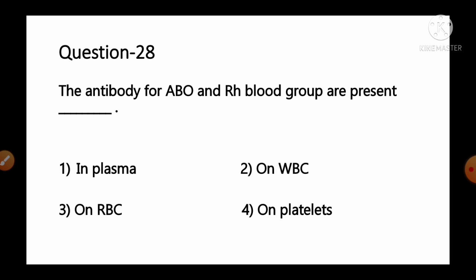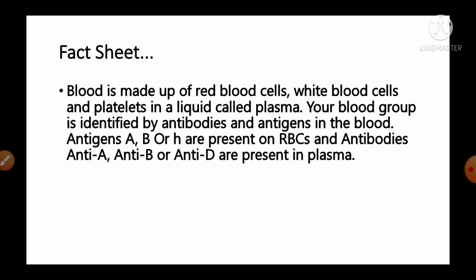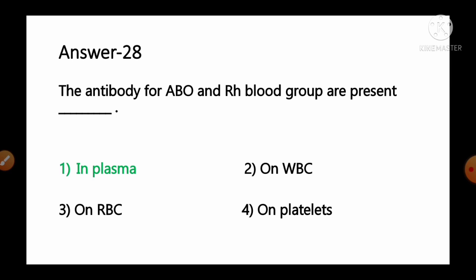Question number 28: The antibody for ABO and RH blood group is present in — options: 1) plasma, 2) WBC, 3) RBCs, 4) platelets. Blood is made up of RBCs, WBCs, platelets and plasma. Antigens (A, B or H) are present on RBCs, whereas antibodies (anti-A, anti-B and anti-D) are present in the plasma. So option number 1, in plasma, is the correct answer.